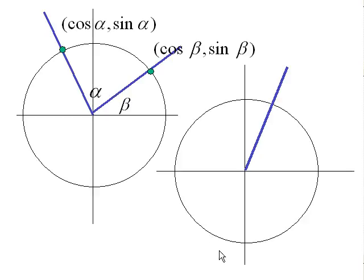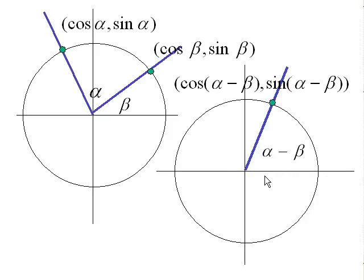Let's put that angle in standard position. So alpha minus beta is this part of the angle, and if I rotate that around so it's in standard position, it is alpha minus beta there. Alpha minus beta in standard position has on the unit circle a point with coordinates cosine and sine of that difference, alpha minus beta. The point is this angle is the same as this angle.